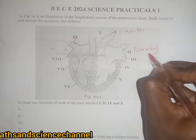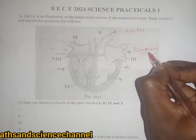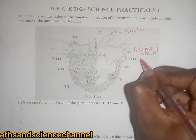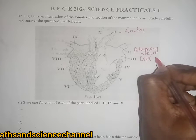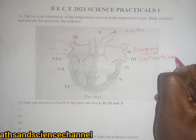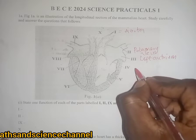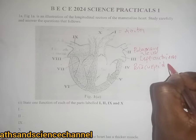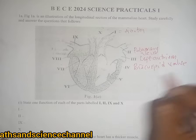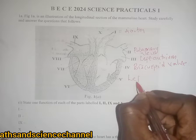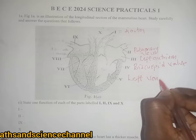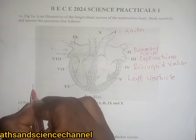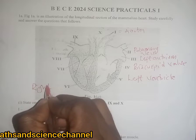Part i is the aorta — the outer. Part ii here is the pulmonary vein. Part iii is what we call the left atrium. Part iv is the bicuspid valve. Part v here is the left ventricle.